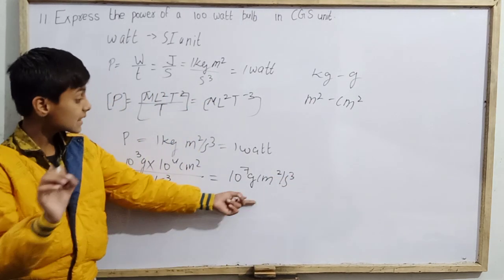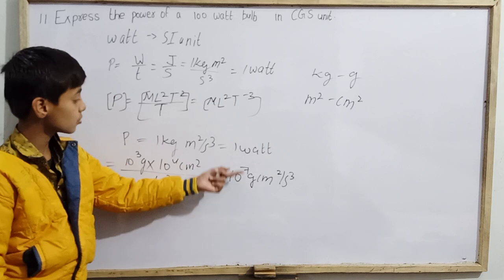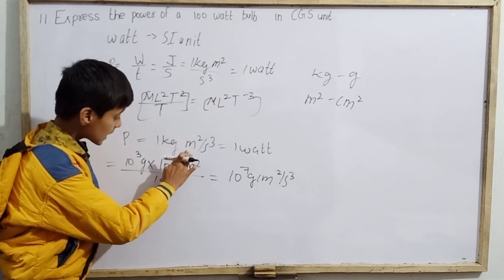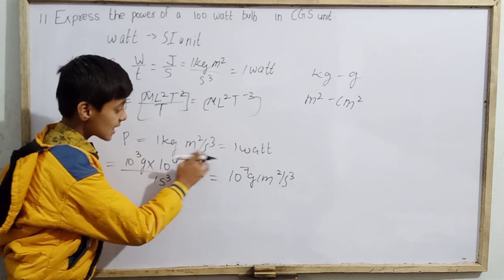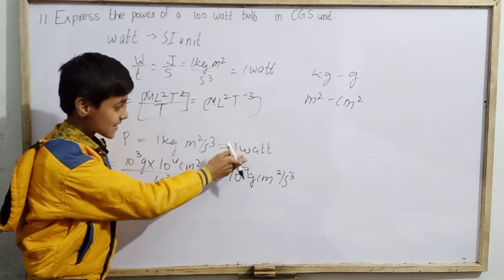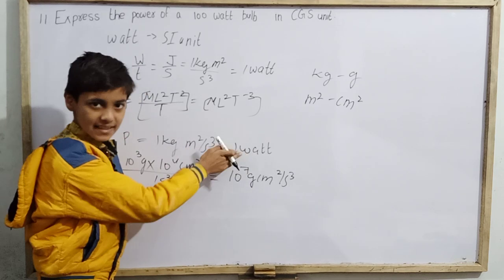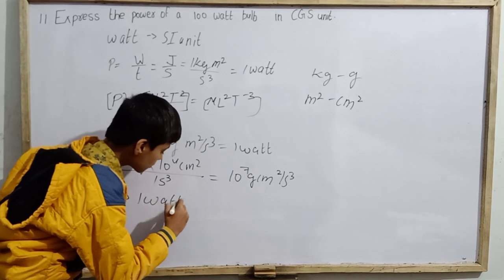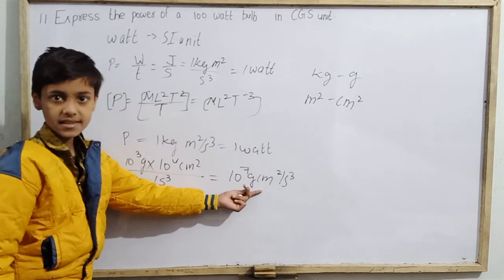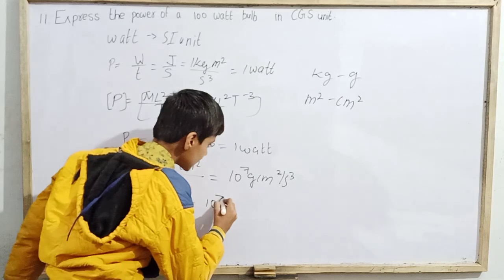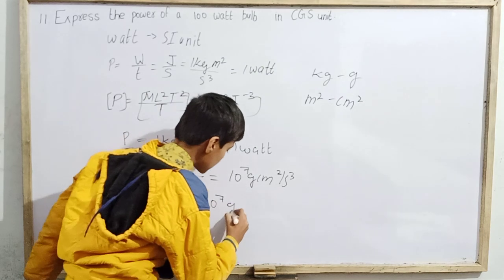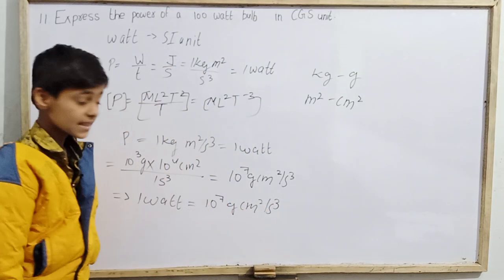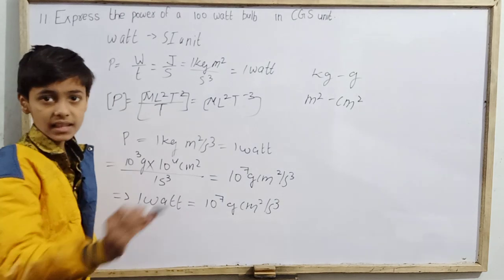Multiplying it out gives 10⁷ gram·cm²/s³. So we get the conclusion that 1 watt equals 10⁷ gram·cm² per second cubed. This is the CGS equivalent of 1 watt.